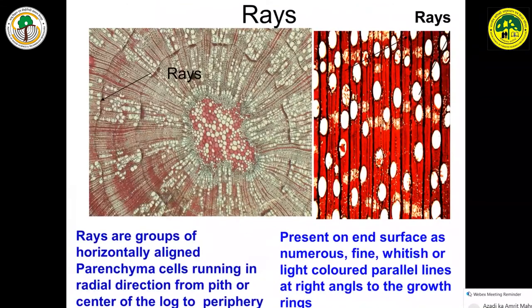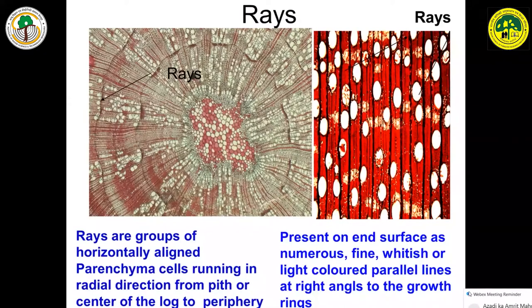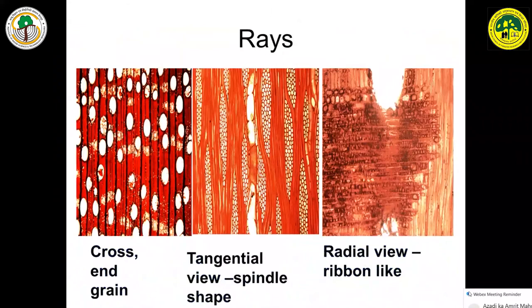Then rays — rays are groups of horizontally aligned parenchyma cells running in a radial direction, from the pith or center of the log to the periphery. Rays are present on the end surface as numerous fine whitish or light-colored parallel lines at right angles to the growth rings. In cross section, rays look like parallel lines perpendicular to the growth rings. In tangential section, they look like spindle shapes. In radial section, they look like ribbons.